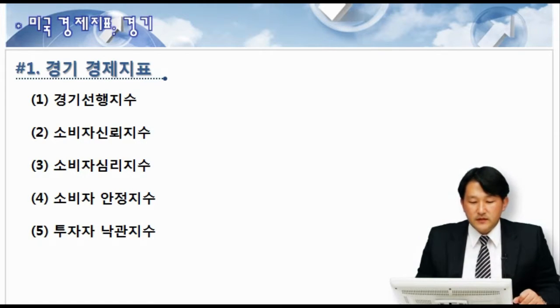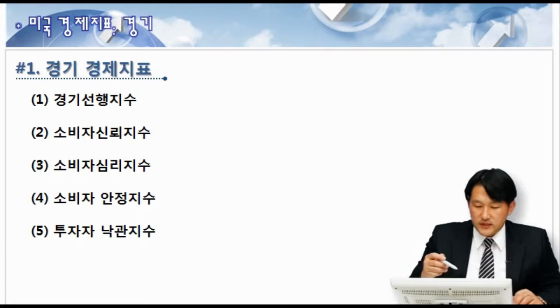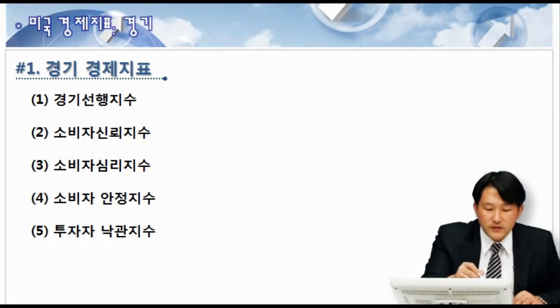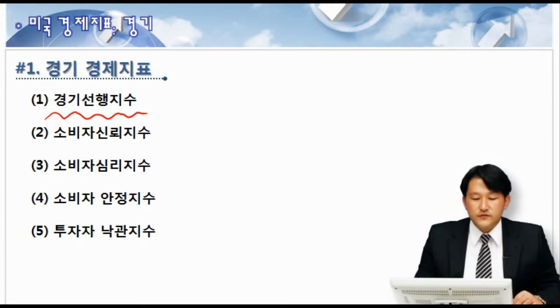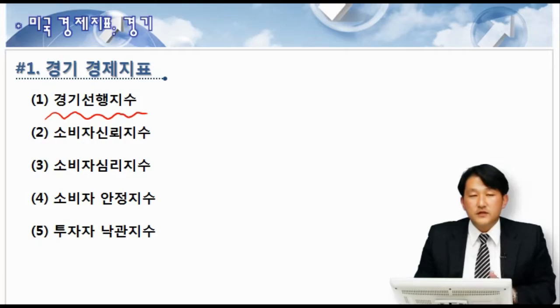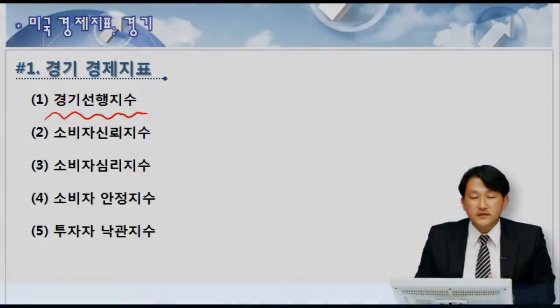다섯 가지 지표가 있는데요. 첫 번째가 경기 선행지수입니다. 경기 선행지수는 미국뿐만 아니라 모든 나라가 다 만드는 지표인 거죠.